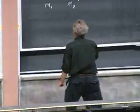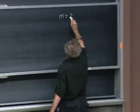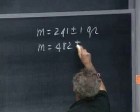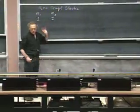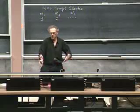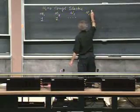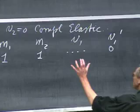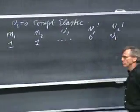One mass is 241 ± 1 gram and the other is 482 ± 1 gram. In the first experiment, I will use the two equal-mass cars — ratio one-to-one. The prediction is that V1 prime will be zero and V2 prime will equal V1. I'll give it a certain velocity, and we measure the time for each object to move over ten centimeters. The uncertainty in each time is about two-and-a-half percent.